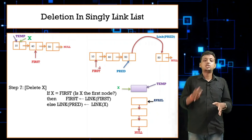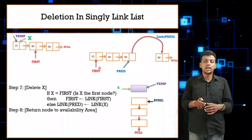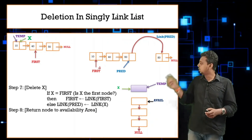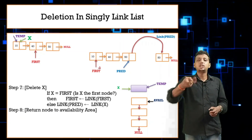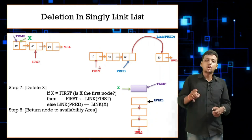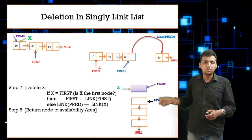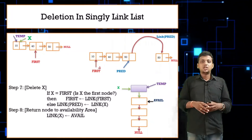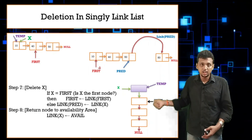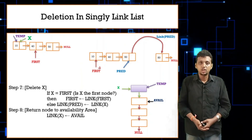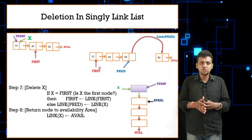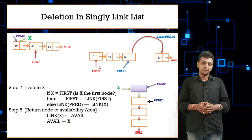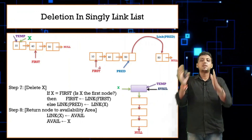After deleting the node, you need to restore it to the availability stack. The deleted node pointed to by temp and x must be linked back. Step: link of x = avail. Then set avail = temp (or x). Now the avail pointer moves and points to the deleted node, which becomes the topmost node of the availability stack. The availability stack, represented as a linked list, is updated and the deletion is complete.